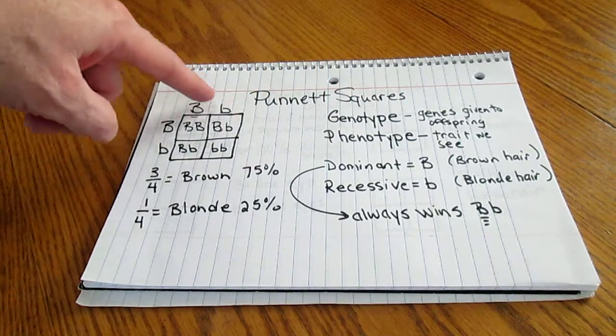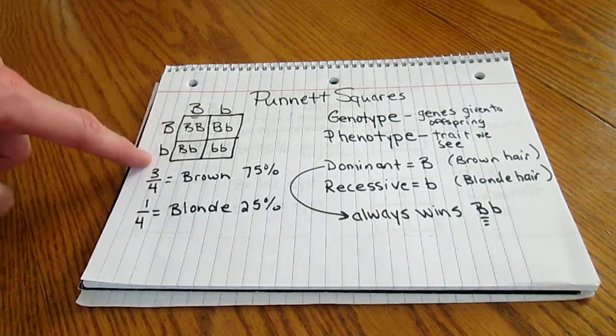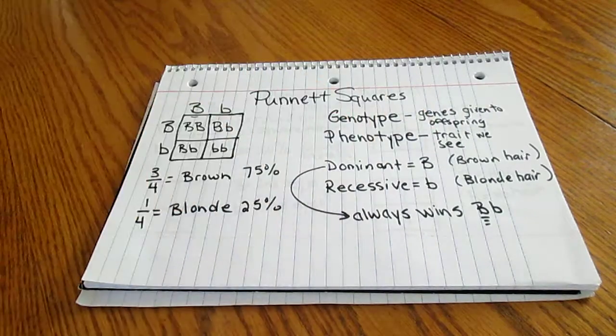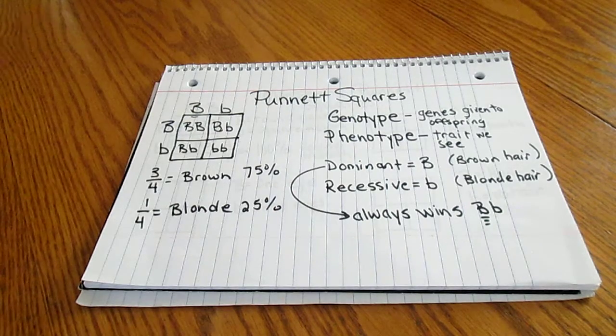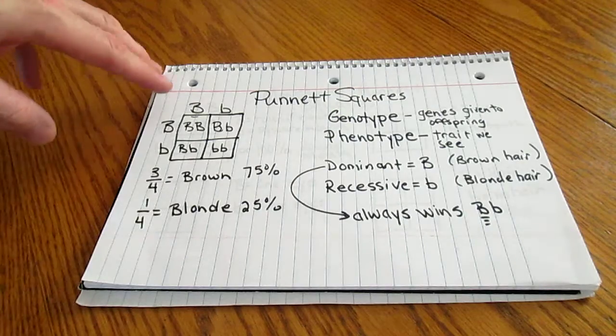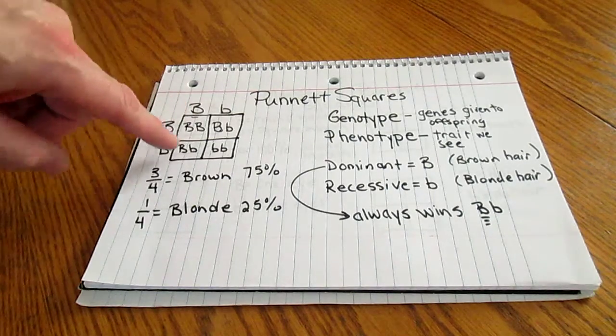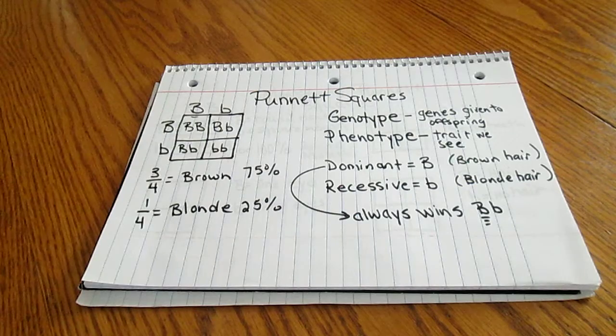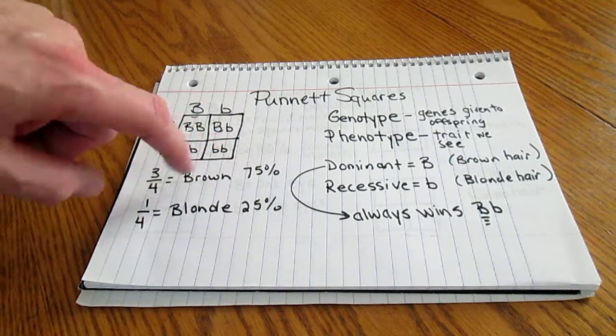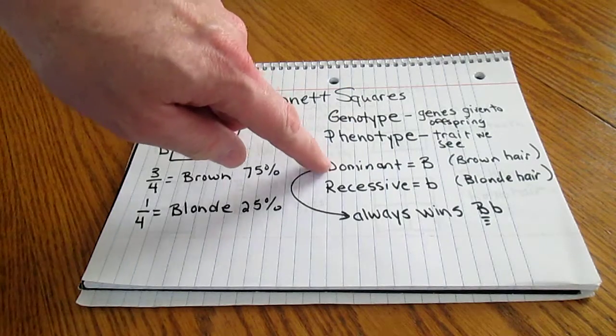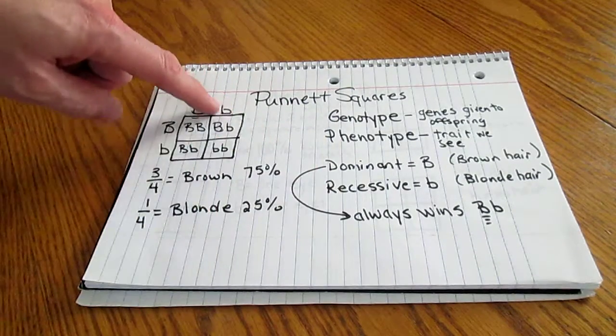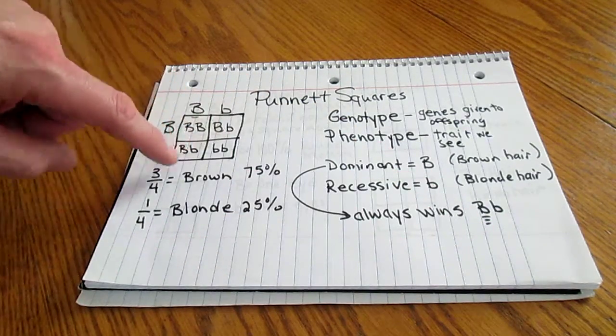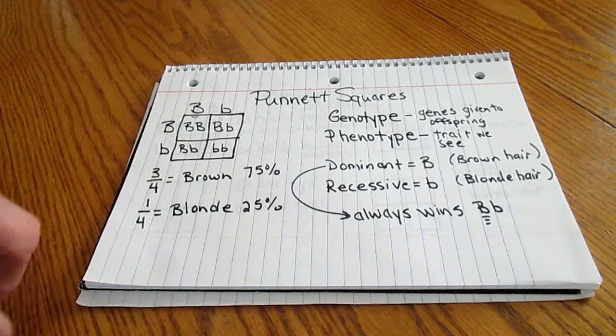In this case, dad has a big B and a little b, mom has a big B and a little b. These are their genotypes and they pass those to their offspring. The phenotype is the trait we actually see. So in this case, we're doing brown hair and blonde hair. If you look at our combinations, three out of four offspring would all have brown hair. We'd have one out of the four offspring would get blonde hair because that's the only spot where we have two recessive genes working together. We have a dominant gene, which is the big B, and a recessive gene, which is the little b. Dominant always wins, which is why three out of the four would have brown, but only one out of four would be blonde.